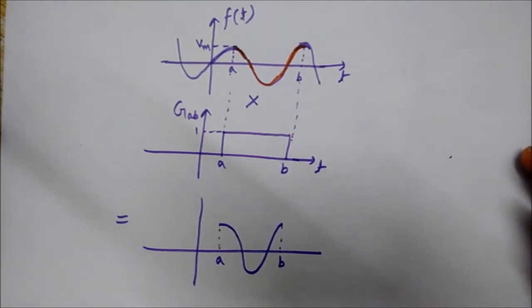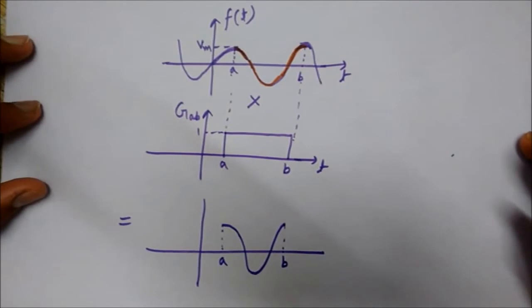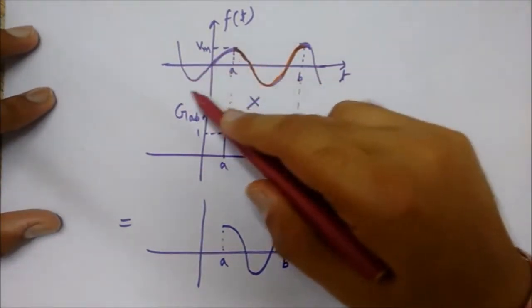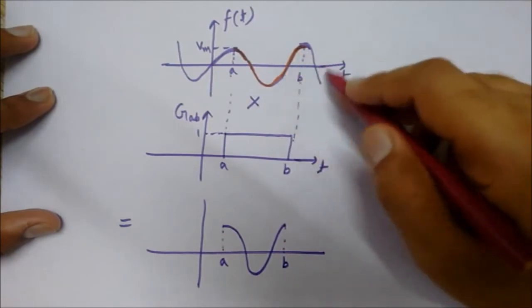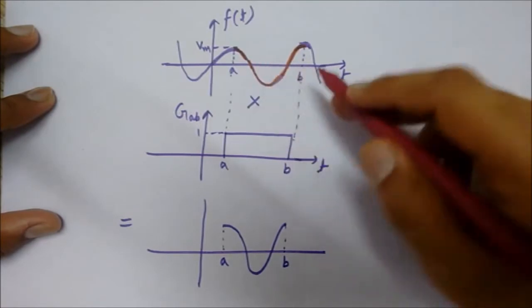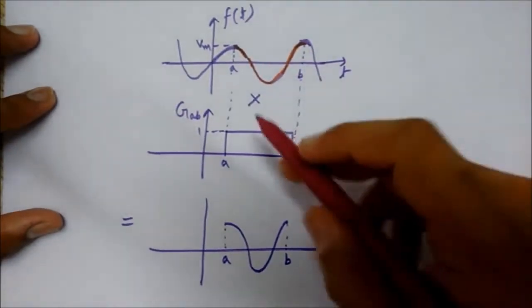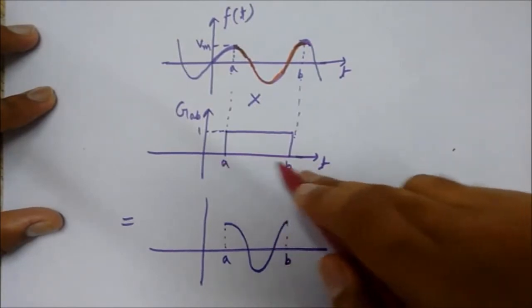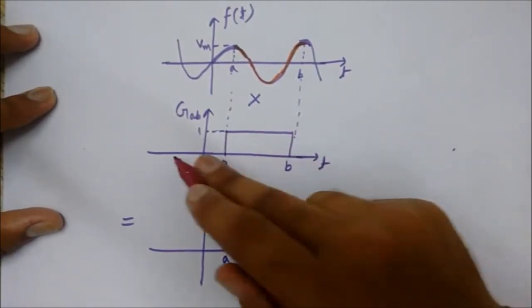Let's see how this happens. Here I am taking a sinusoidal kind of graph, so these are the a and b points. Now I am going to multiply this signal with this gate signal. Between a and b it has one value, and it has 0 values at these points.